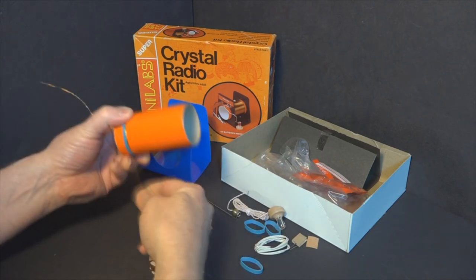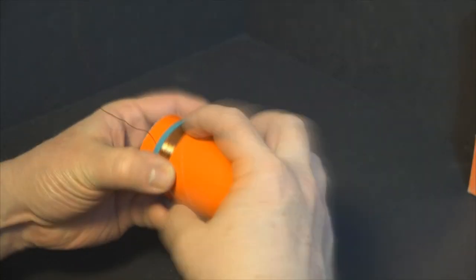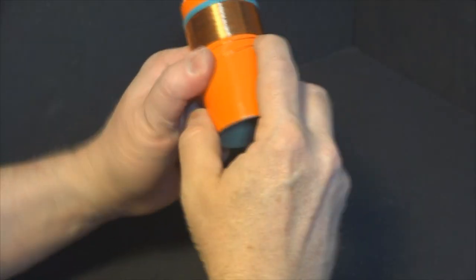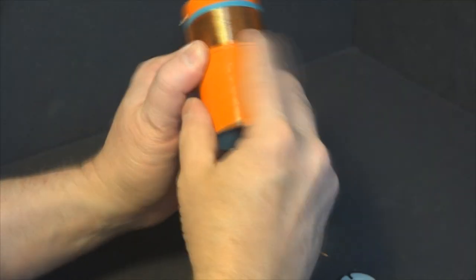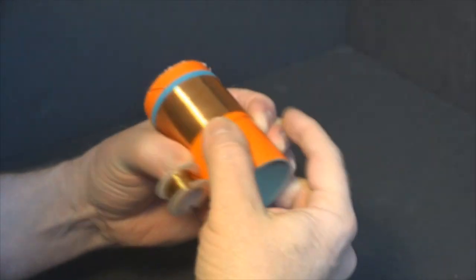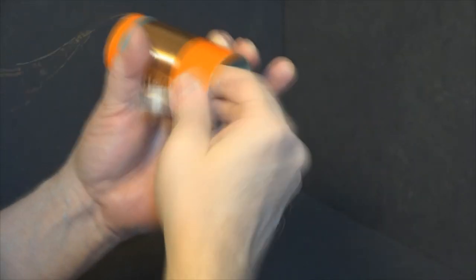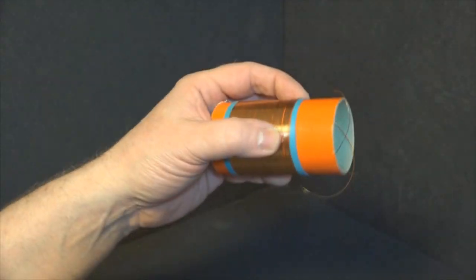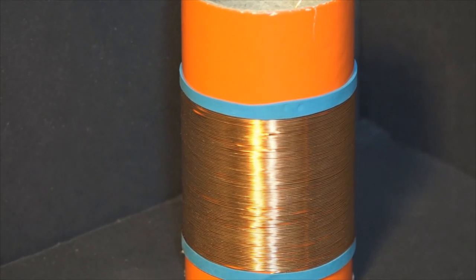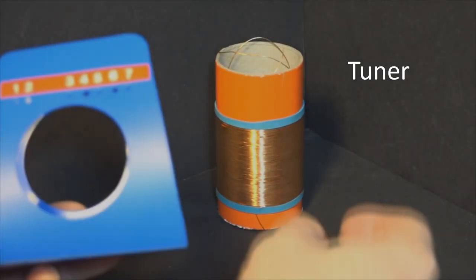The tuner coil gets wound tight with the coils touching, but not overlapping. Here we go.